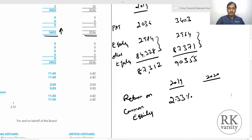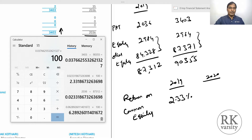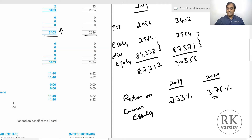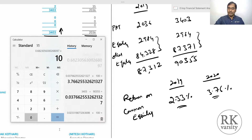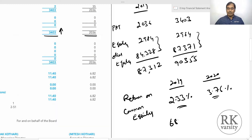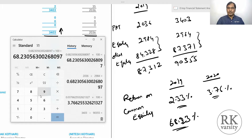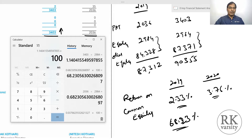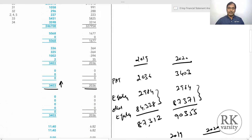For financial year 2020, return on common equity is 3,403 upon 90,355 into 100, giving 3.76%. So there is an increase in return on common equity. However, if you exclude other equity and consider only the issued and subscribed common equity, then for 2019 it would be 2,036 upon 2,984 into 100, which is 68.23%, and for 2020 it is 3,403 upon 2,984 into 100, which gives 114%.